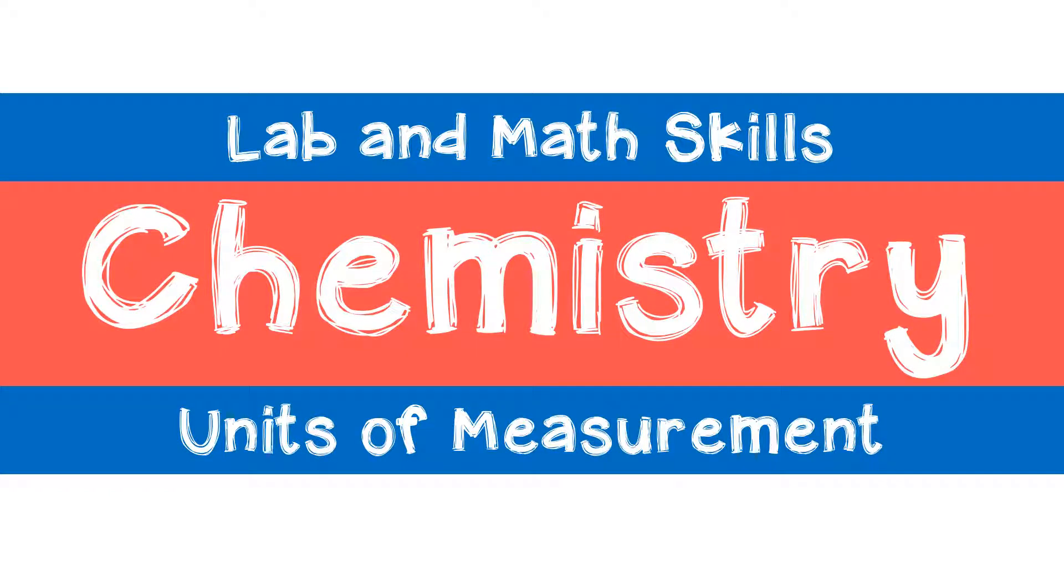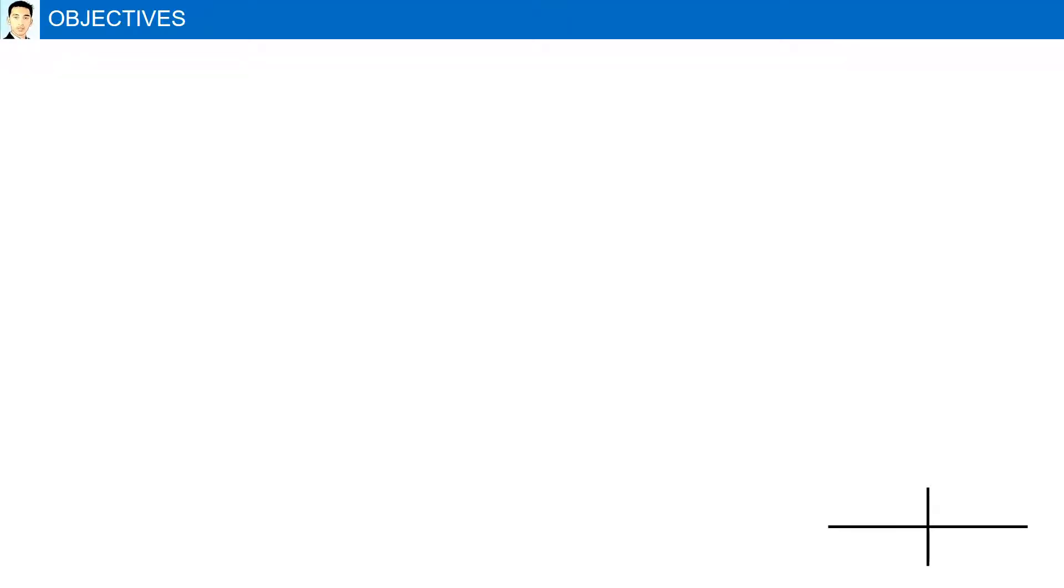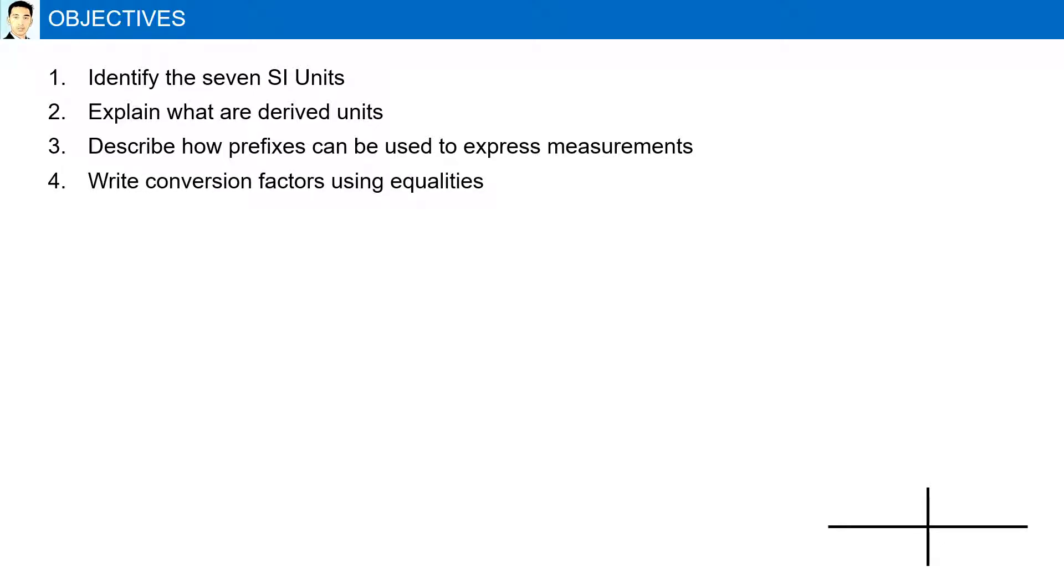Units of measurement. Objectives: Identify the seven SI units, explain what are derived units, describe how prefixes can be used to express measurements, write conversion factors using equalities, and finally use conversion factors to change from one unit to another.